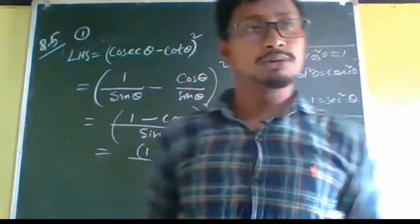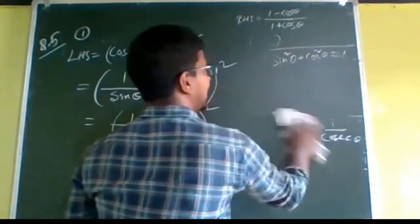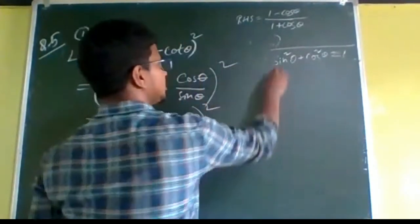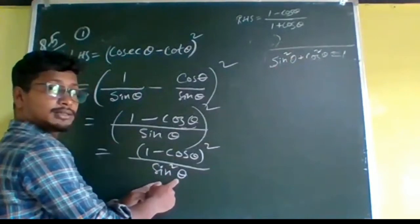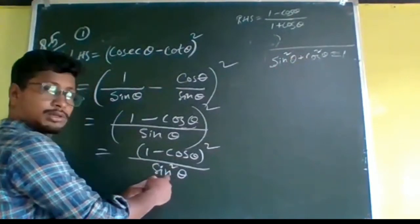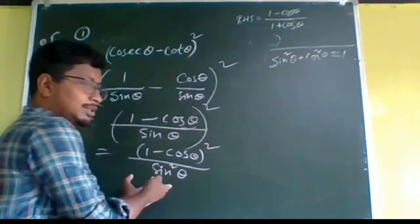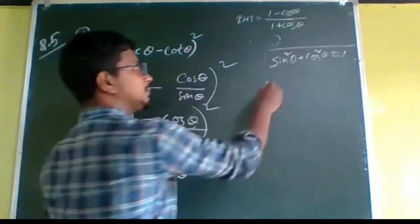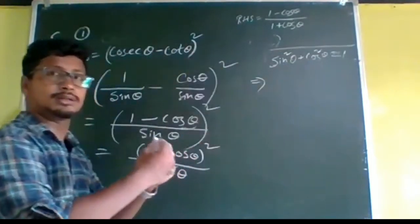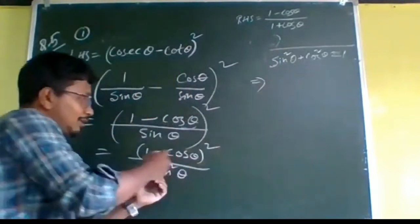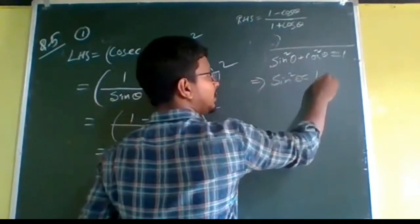Now we have to use an identity. We will use the first identity: sin²θ + cos²θ = 1. We have sin²θ in the denominator, so we have to do something with it — we cannot keep it as it is. That means, can we write sin²θ in terms of cosθ? Let us see: sin²θ = 1 - cos²θ.